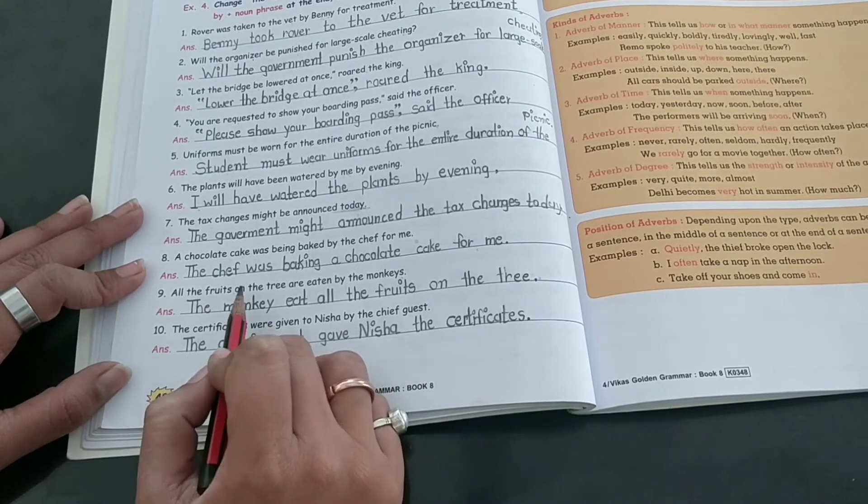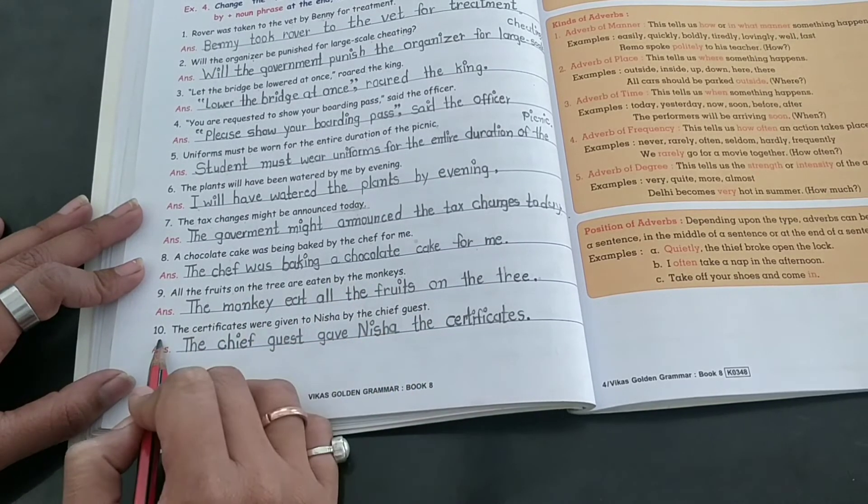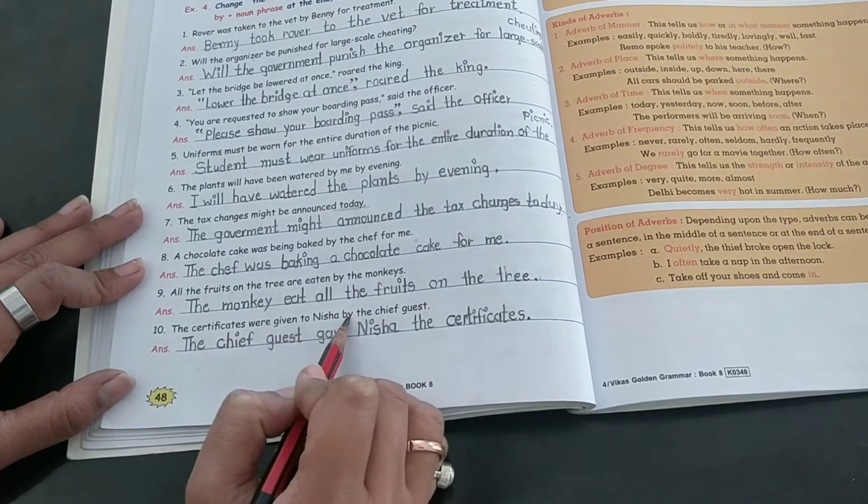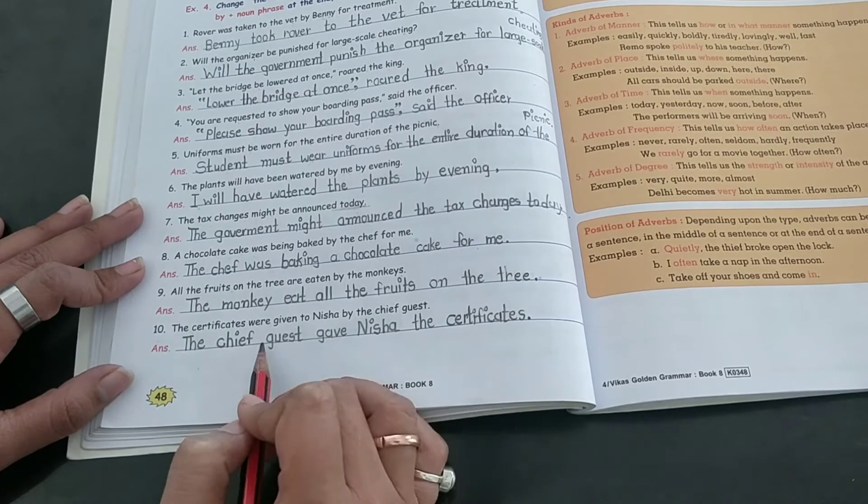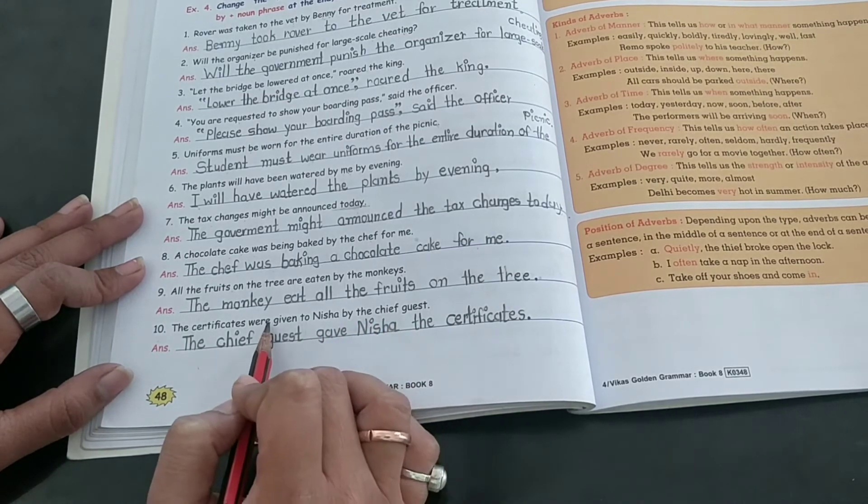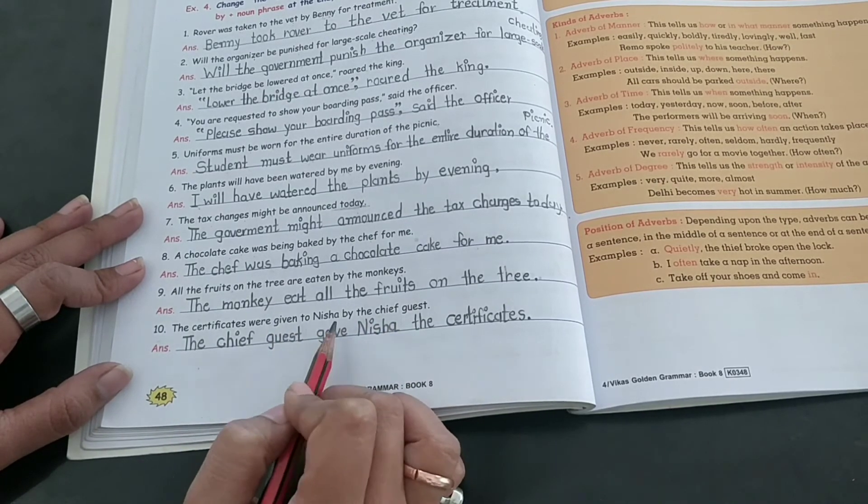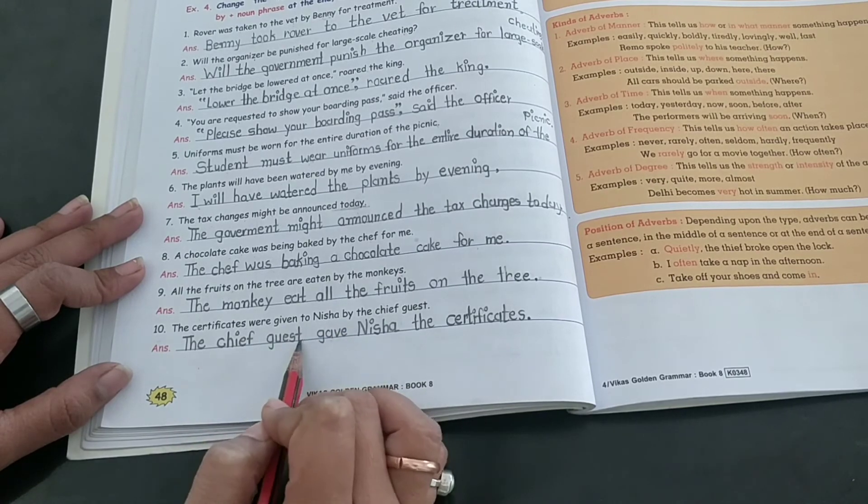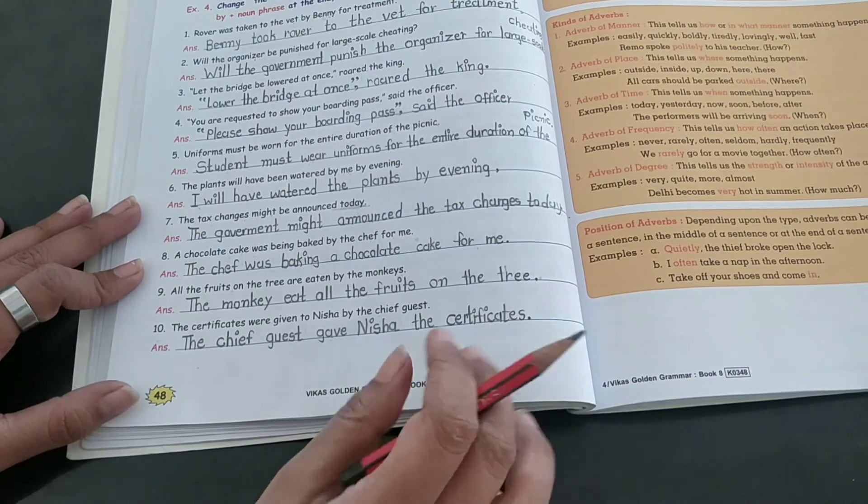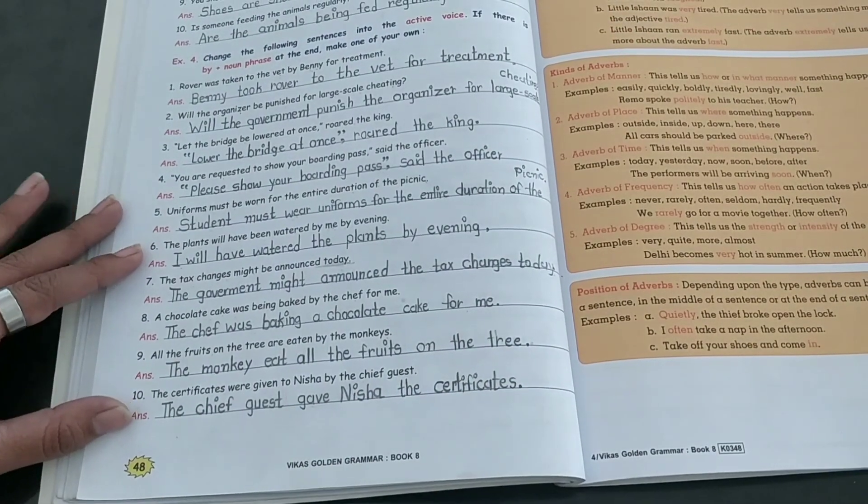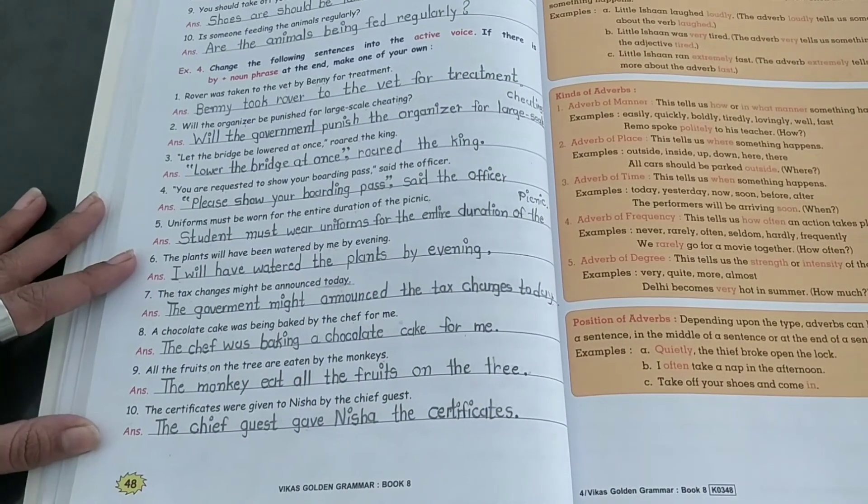The certificates were given to Nisha by the chief guest. The chief guest gave Nisha the certificates. OK, a bit complicated. Pay attention. With yourself. OK, bye.